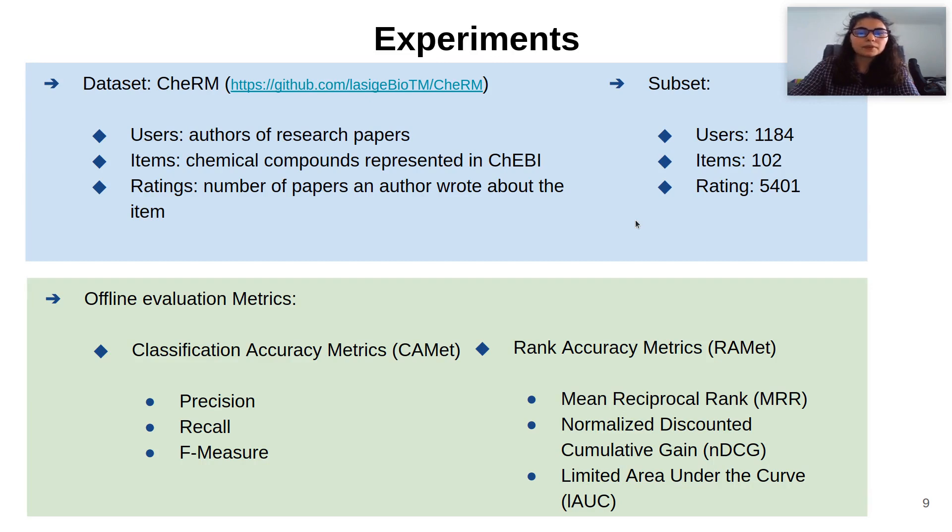For this experiment, we used a subset of a dataset called ChERM, the Chemical Recommender Matrix. This is a standard dataset of user-item ratings, where the users are the authors of research papers, and the items are chemical compounds in ChEBI, and the ratings are the number of papers an author wrote about an item.